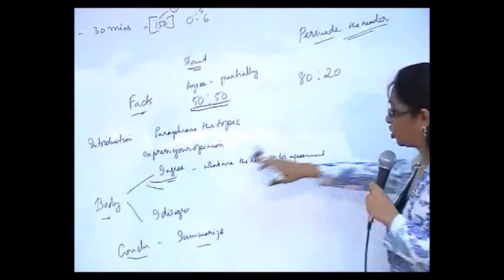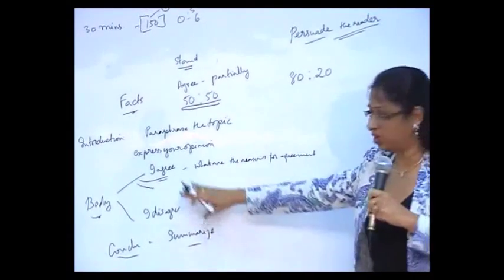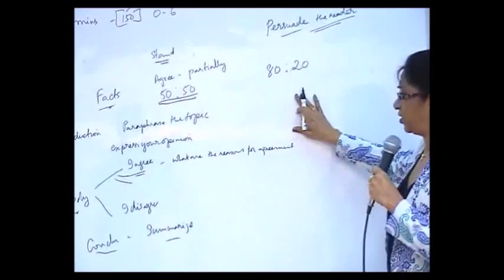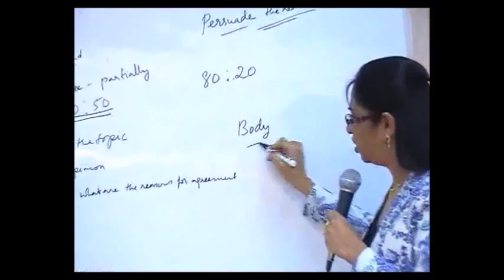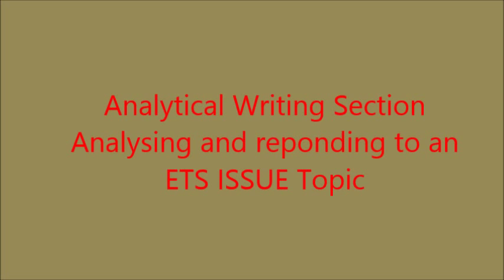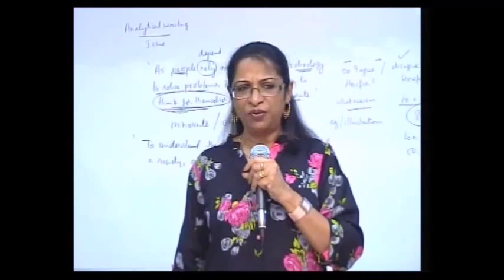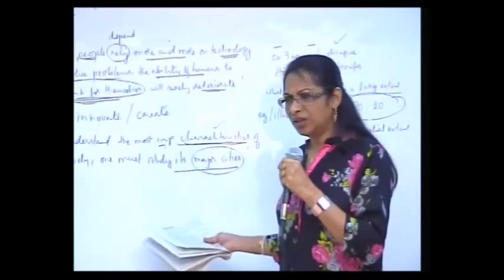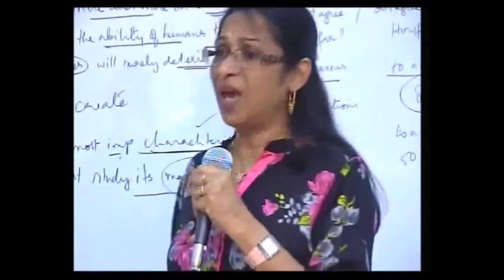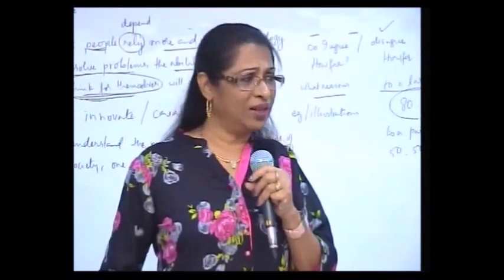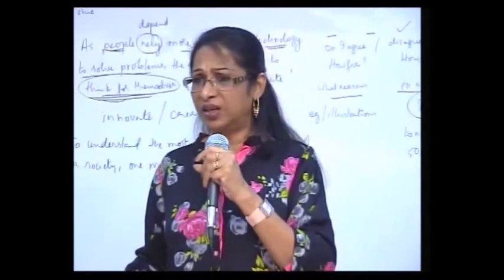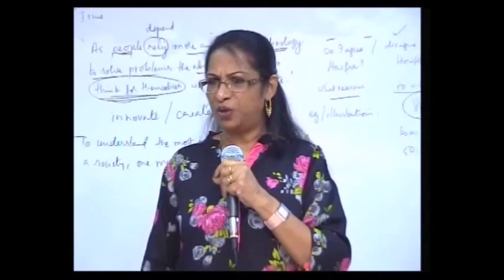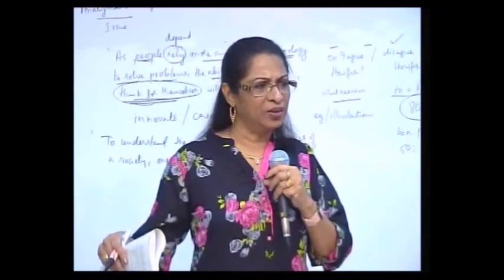In the body of the essay, instead of dividing it into two broad components — because here you have equal reasons for agreeing and equal reasons for disagreeing — the body must be more focused on your opinion. So therefore, I would agree with the statement to a large extent and discuss all the reasons for doing so by giving examples, studying various cities, looking at the different aspects of the city that indicate certain major characteristics of that particular society, and using this as an example for putting forward my opinion.